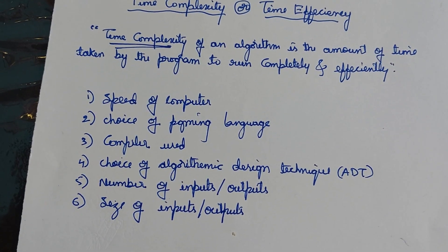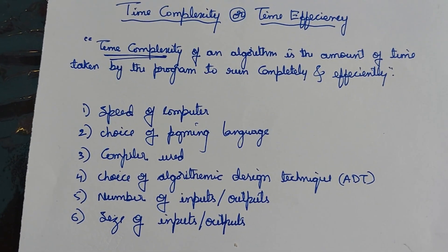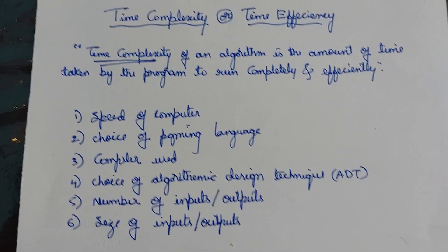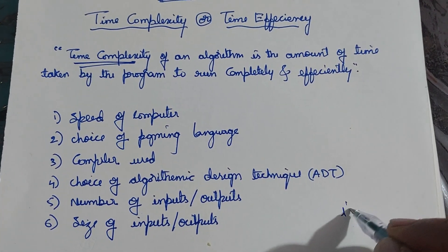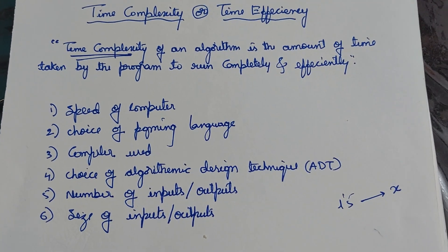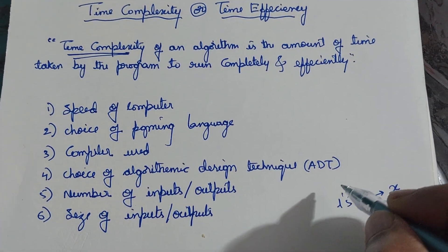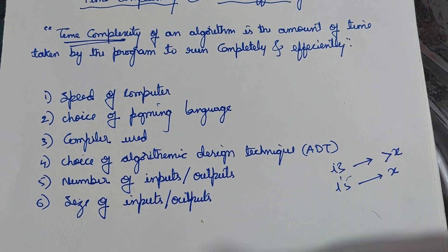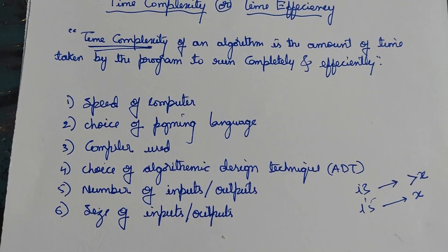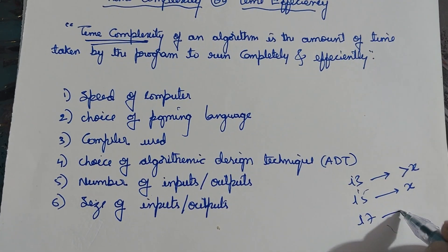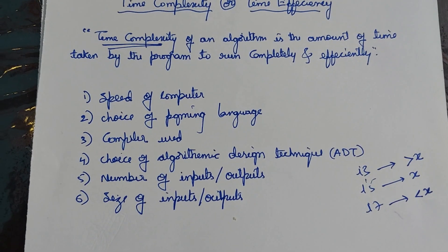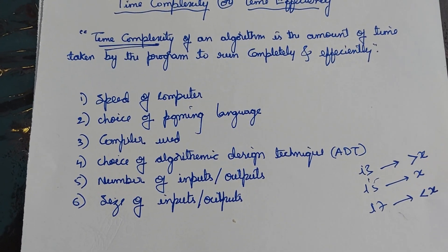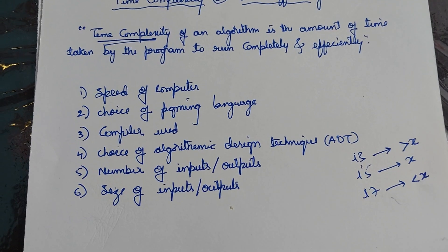Let us discuss one by one. Speed of a computer means on what type of system we are running our program or algorithm. Suppose if we run our program on an i5 machine, it will take some x amount of time. If we run the same program on an i3 processor, it will take more than x amount of time. On an i7, it will take less than x amount of time. So the time complexity depends on what type of processor we are using.